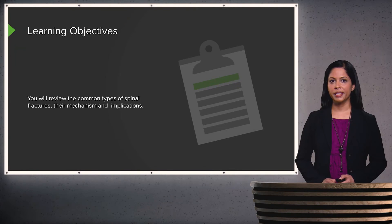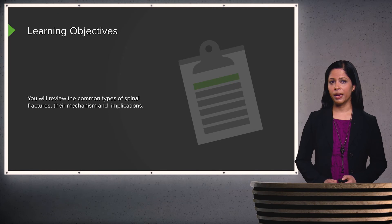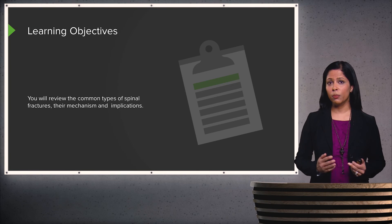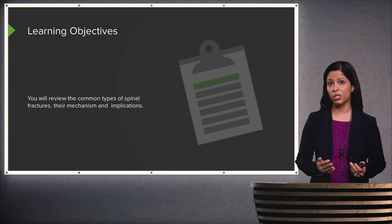In this lecture, we'll be discussing spinal trauma. When a patient comes in with a traumatic injury to the spine, imaging can play a key role because it can help you exclude an abnormality that can lead to a long-term complication in the patient, such as paralysis.